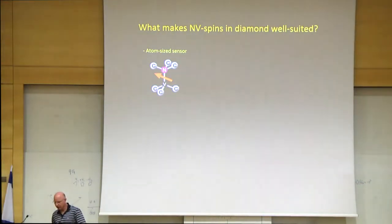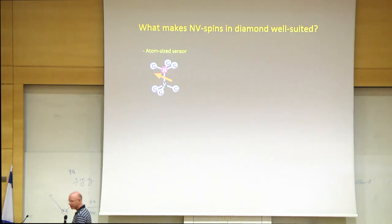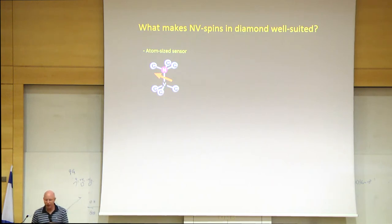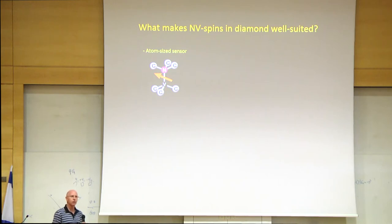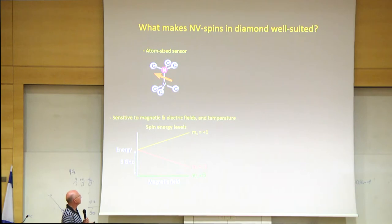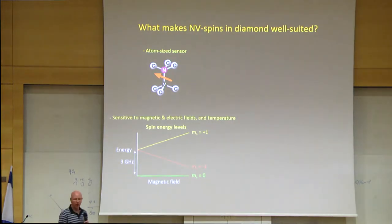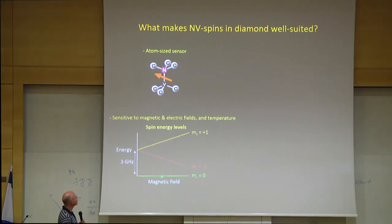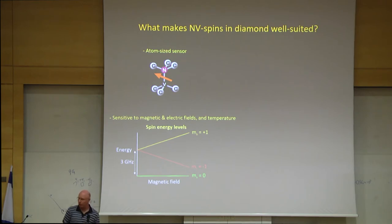Since you've already heard a talk about NV centers, I'll just tell you about the properties we're using for our experiments. NV centers are defects in diamond with a simple energy level diagram consisting of three levels. The ground state MS equals zero is magnetically inactive, and there are two excited states affected by magnetic field. The simplest way to determine magnetic fields is by electron spin resonance — at any magnetic field, the system absorbs at two frequencies, so by detecting the absorption frequency we know the magnetic field.